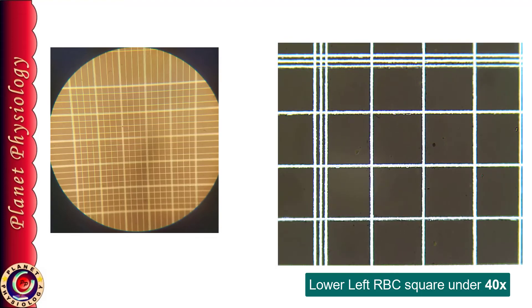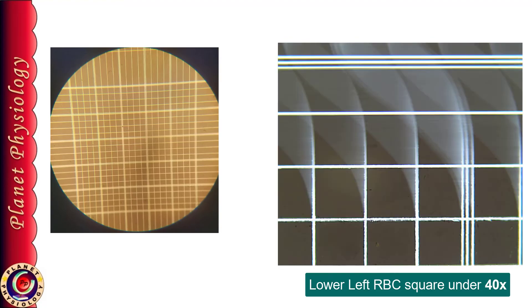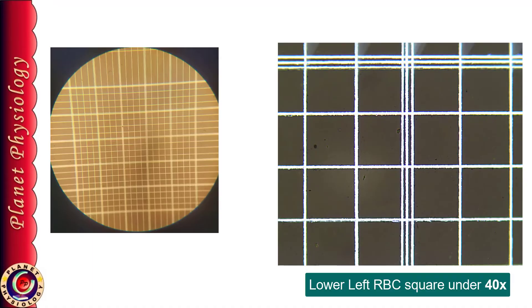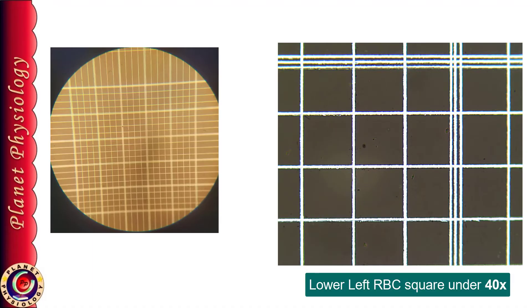Once you find out any one corner square then your job is very easy to find out the other corner squares. Because you know there are 25 such squares.